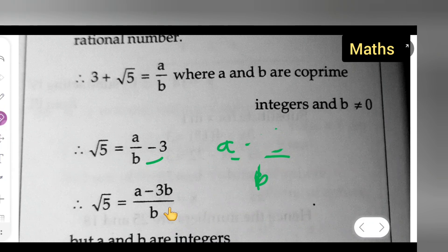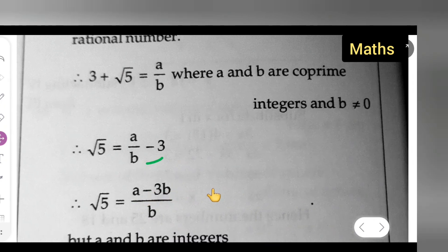Now you can see that here there is a, there is b, then 3 is there. They all are integers.